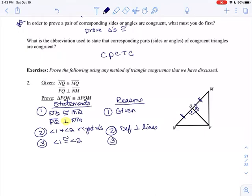So angle 1 and angle 2 are right angles. The reason is definition perpendicular lines. Now, if they're both right angles, that means they both equal 90. They both have to be congruent to each other. Angle 1 is congruent to angle 2 because all right angles are congruent. So I used up my given. I said that my sides were congruent. I dealt with the perpendicular lines.